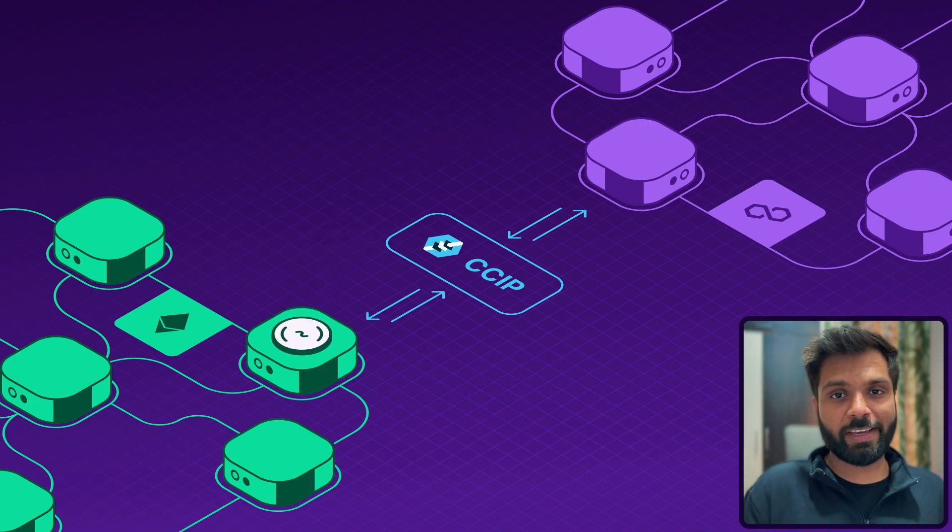Using CCIP, someone can create a cross-chain application and design it so that the gas fee is offloaded on the chain where gas is cheaper, and processing can be offloaded on a chain where it's much faster and efficient. There are innumerable use cases where CCIP can be used.